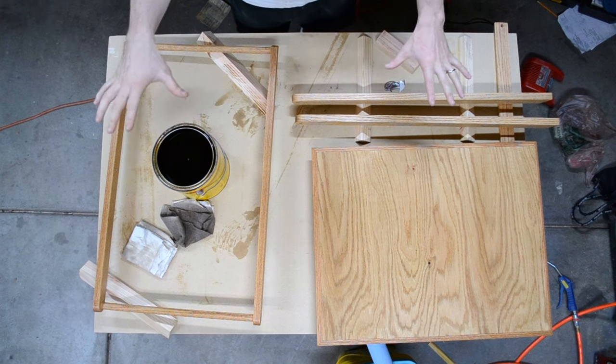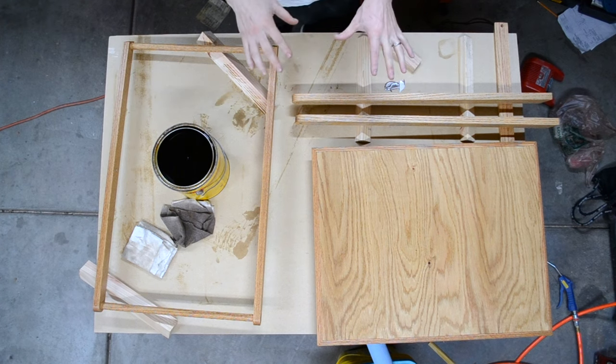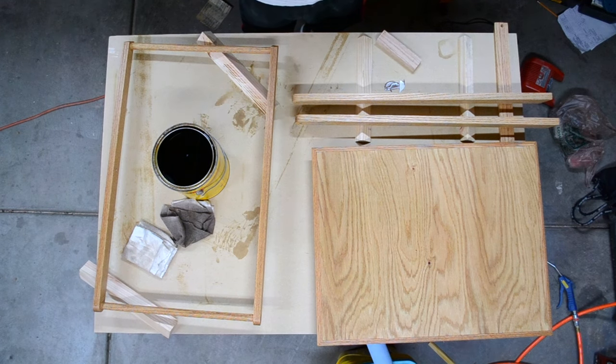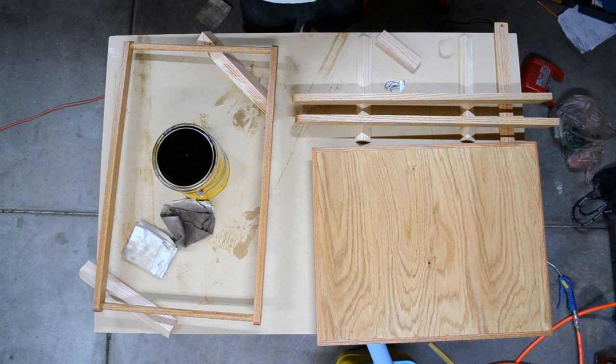So now that I have all the pieces stained, I'm going to let them dry overnight. Once the stain is fully dry, then I will start applying the polyurethane finish.